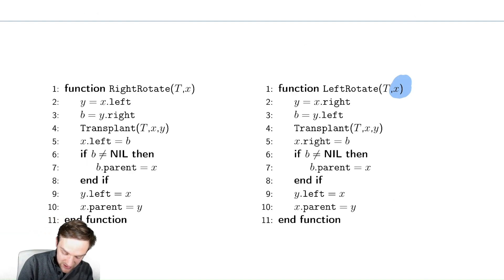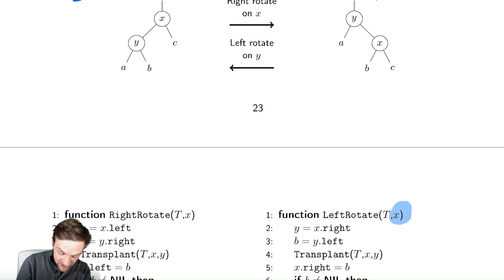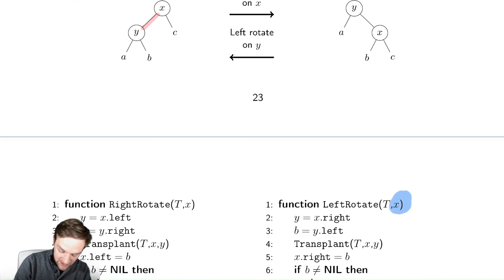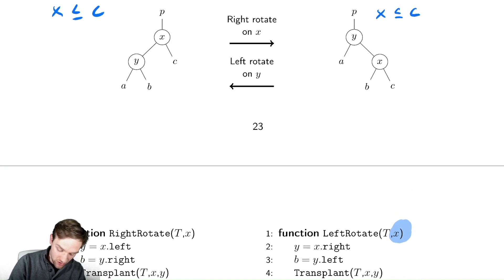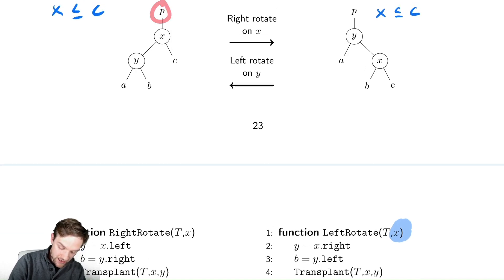So in this example here, for right rotate, y is the thing to the left of x, and b is the thing to the right of y. What I'm going to do is I'm going to replace, or this convenient method we used in delete called transplant, I'm going to transplant and replace x with y. So x gets replaced with y. Notice I don't need to do anything to a or c. The only things that are getting manipulated are the parent and b.